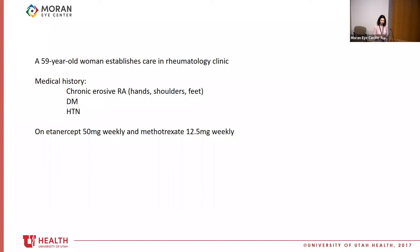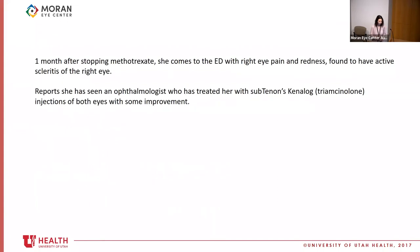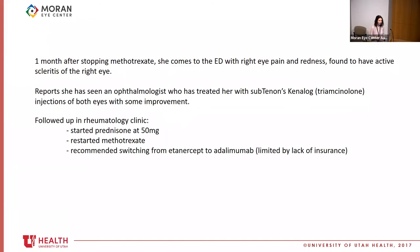One month after stopping her methotrexate, she presents to the ER with right eye pain and redness. Dr. Baer accurately diagnoses her with scleritis and notes she has been seeing an ophthalmologist who treated her with sub-Tenon's Kenalog every couple of months with partial improvement. She is discharged and followed up in rheumatology clinic, where she is started on oral prednisone 50 mg daily, restarted on methotrexate, and recommended to switch from Enbrel to adalimumab (Humira), since etanercept has very little efficacy in uveitis. However, the switch was limited by her lack of insurance.